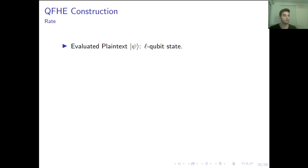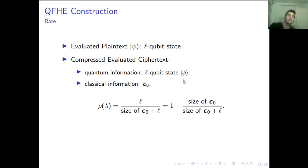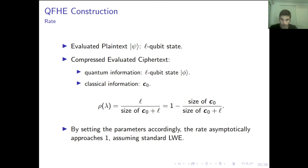Looking at the rate of this construction: the message was L qubits. In the compressed evaluated ciphertext, the quantum information is still L qubits, but the classical component is just this vector C0. Calculating the rate, if we set the parameters accordingly and L is large enough, we can get the rate asymptotically equal to 1 — just by assuming a polynomial modulus-to-noise ratio with respect to L.